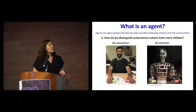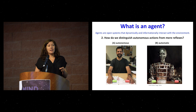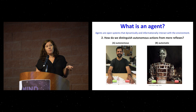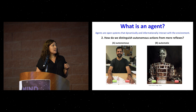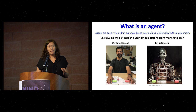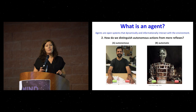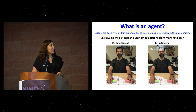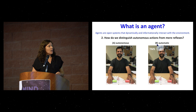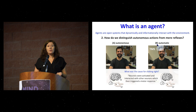The second question is: how do we distinguish autonomous actions from mere reflexes? We can have an autonomous system performing the same action — for example, clicking a right button — as a machine that might be performing the action in an automatic manner. But also within an autonomous system, we can have the same action either performed autonomously or as a reflex. For example, a right click of the button can be elicited by a strong magnetic pulse to your brain. In both cases, if we ask what was the cause for clicking right at a mechanistic level, the answer could be that neurons were activated and interacted with other neurons and triggered a motor response. So how can we distinguish autonomous actions from mere reflexes at a mechanistic level?